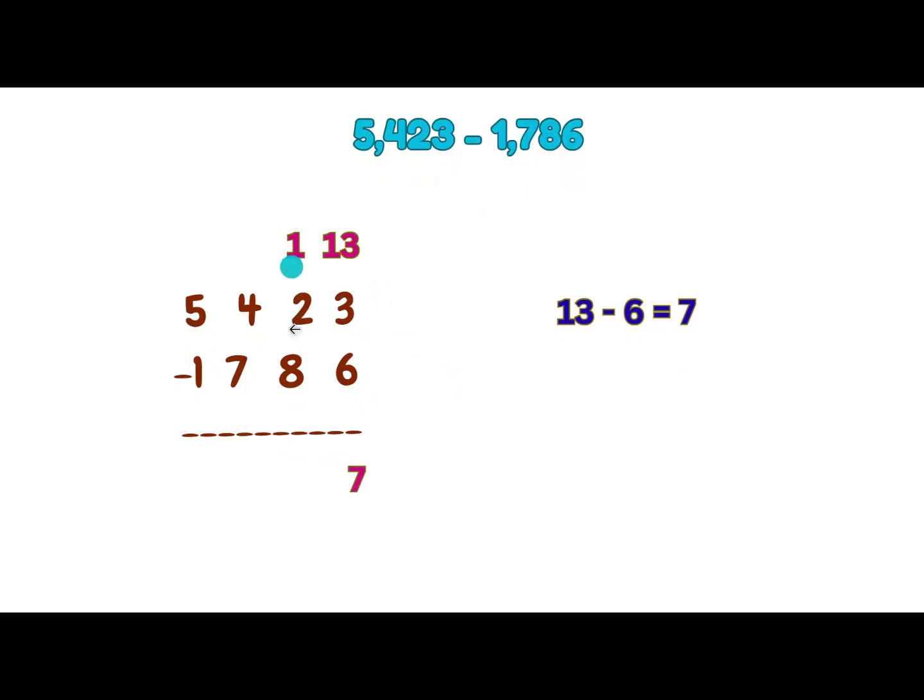Now see tens place, 1 minus 8. After borrowing, the tens place is 1. Since 1 is less than 8, borrow 1 from the hundreds place. 4 becomes 3, and 1 becomes 11.